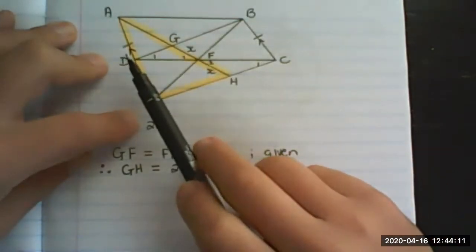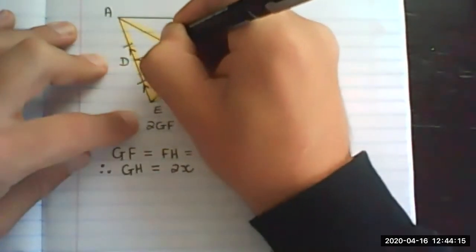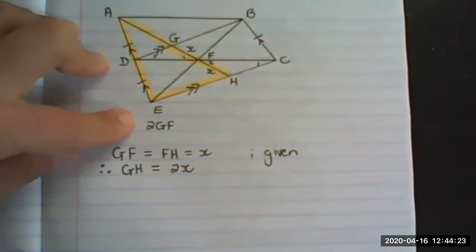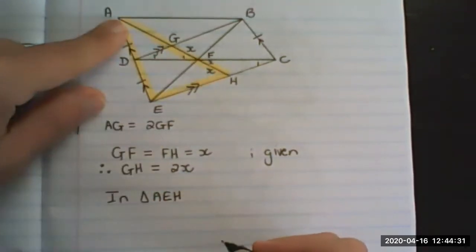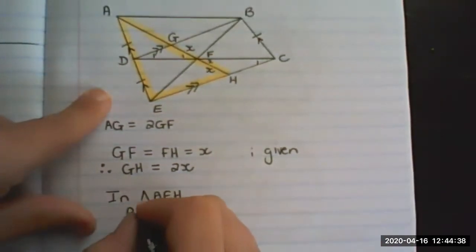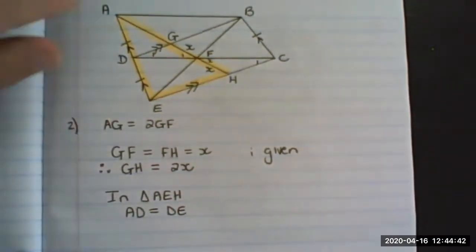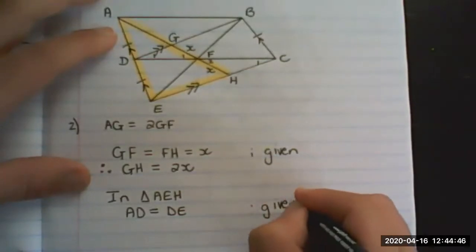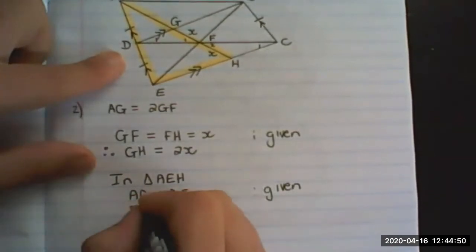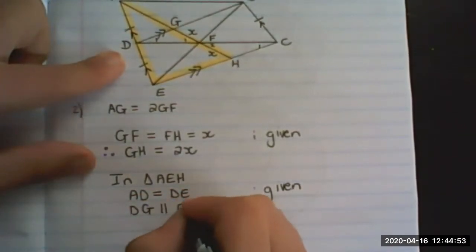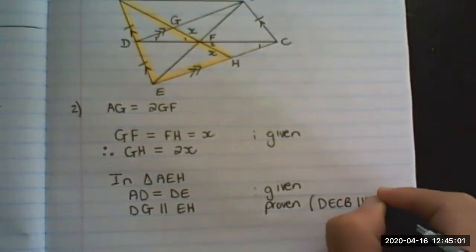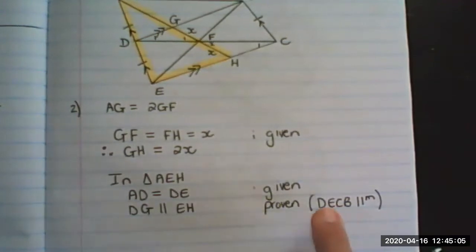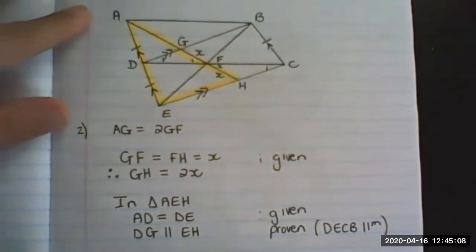In the previous question we proved that this is a parallelogram, therefore this line is parallel to that line. In the triangle AEH, the one I colored in, we have AD equals DE, that was given. And we have DG parallel to EH, proven, and the way it was proven is DECB is a parallelogram.